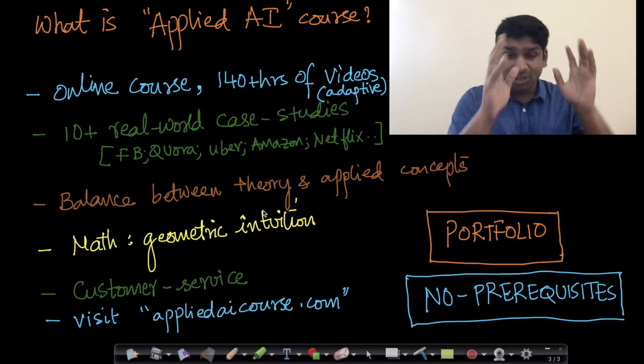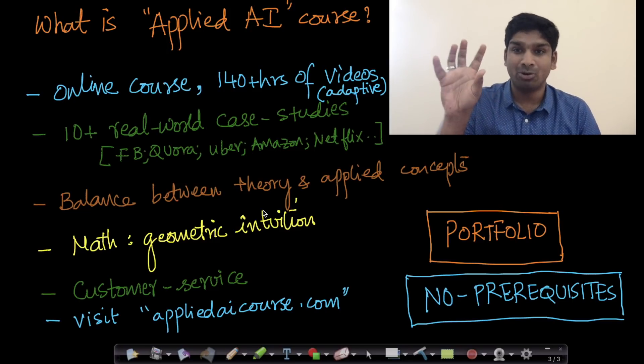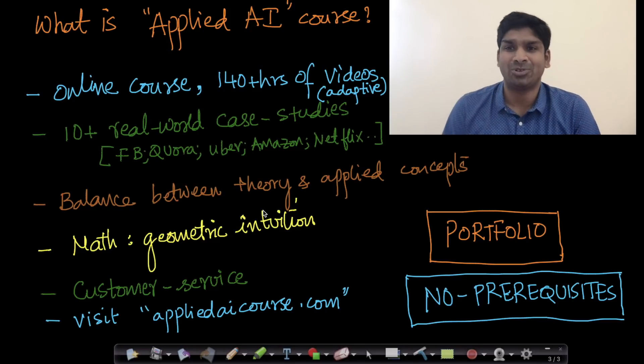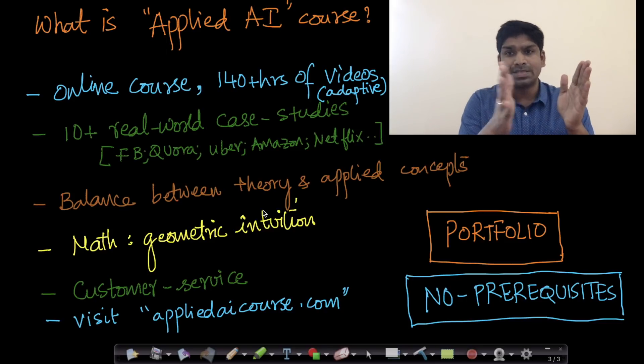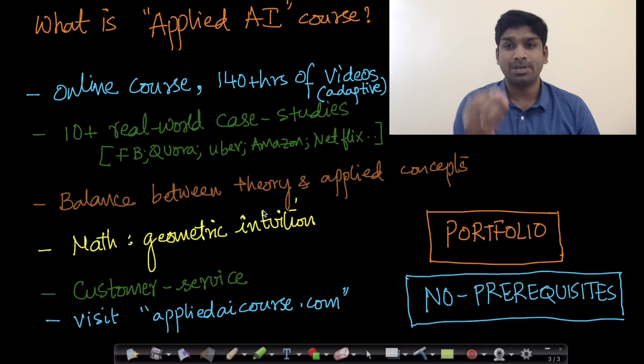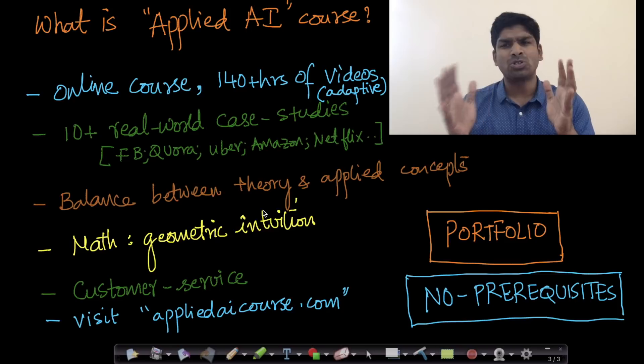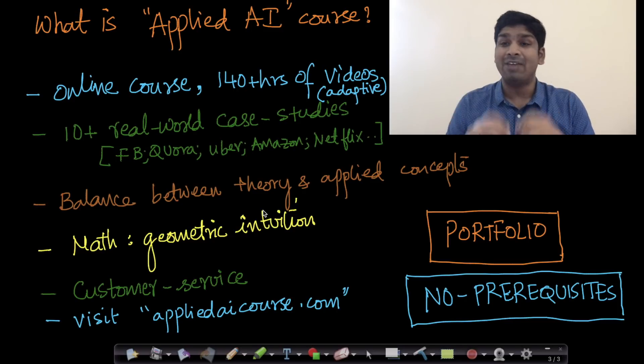In addition to all of this, we also provide something called a portfolio, which is one of the most important things of our course. At the end of all of the theoretical concepts and the 10 case studies, we give each of our course participants five datasets and five real-world problems, and we expect them to solve these five problems over a five to ten week period. Once they solve all of these problems, we evaluate them.